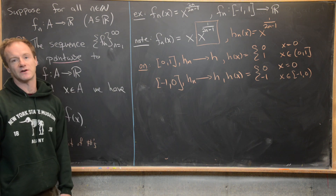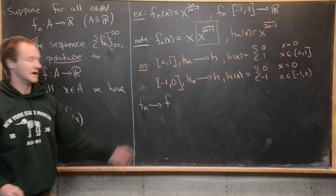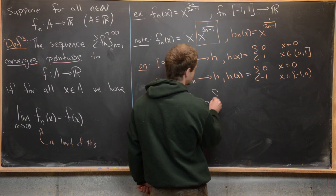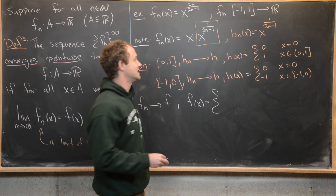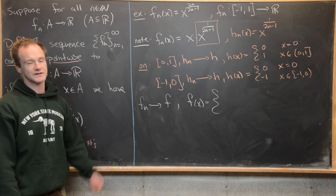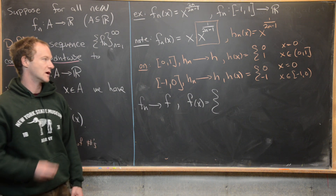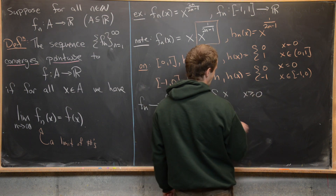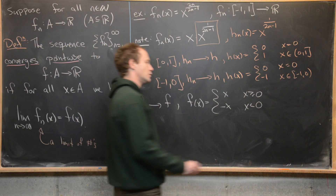Putting this together with the sequence f_n, the sequence converges to the function f where f(x) = x times h(x). Using the piecewise definition of h, this boils down to f(x) = x if x ≥ 0 and f(x) = −x if x < 0. But we have a name for that — it's the absolute value function.